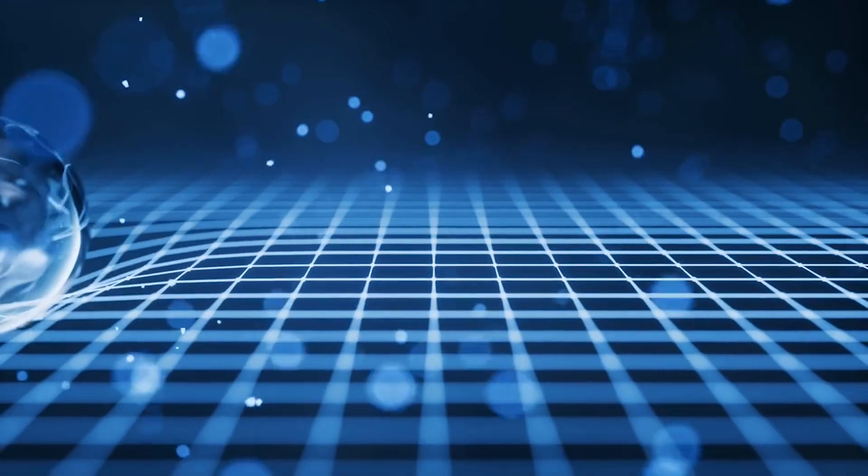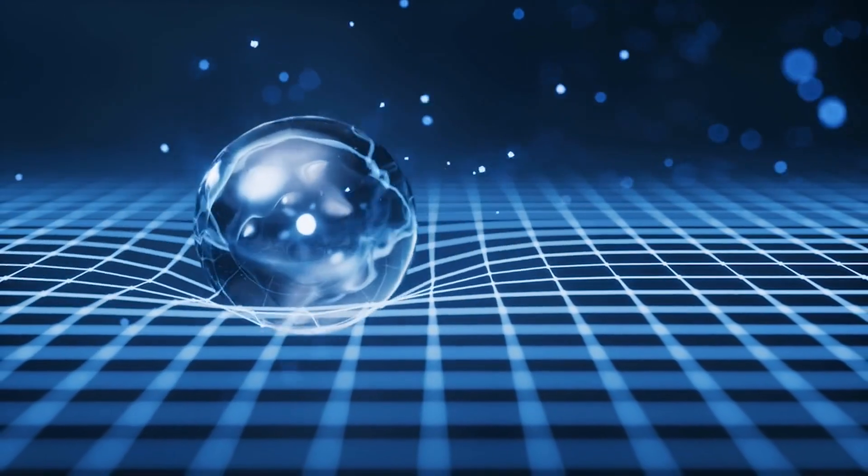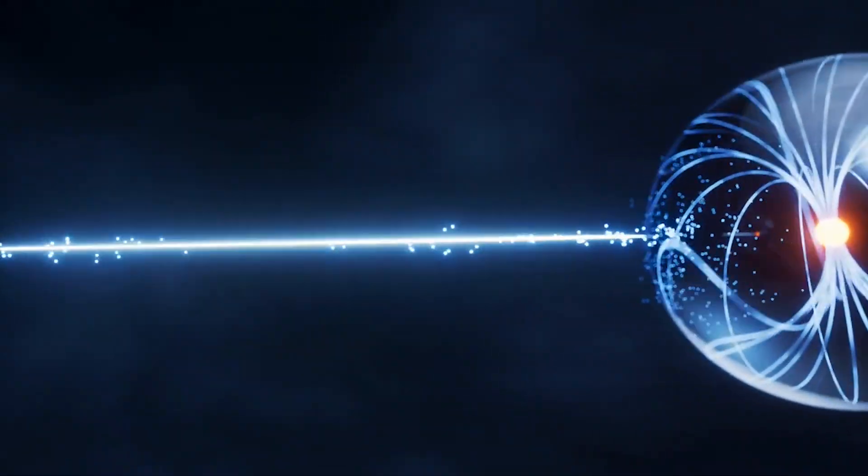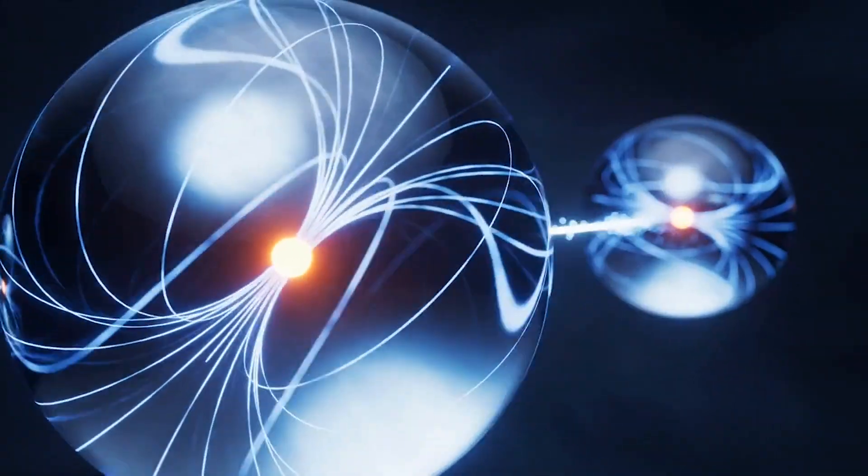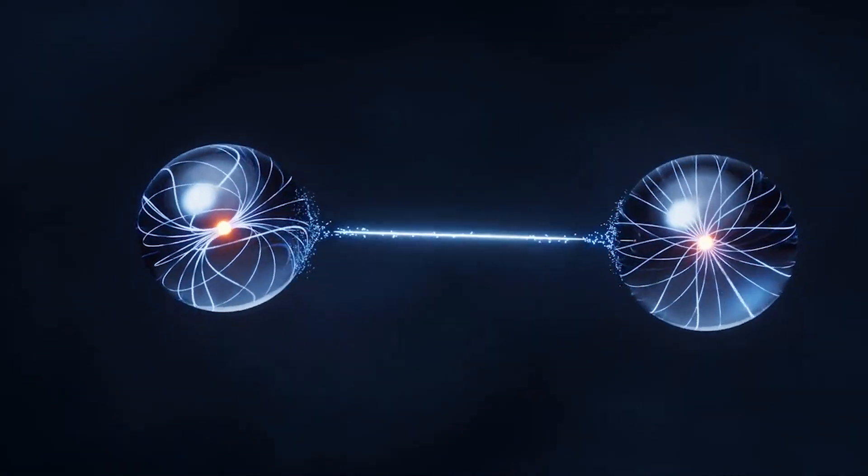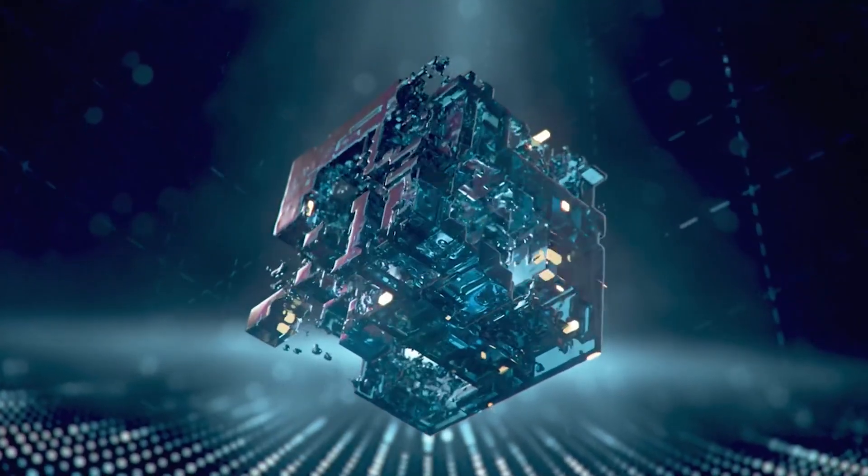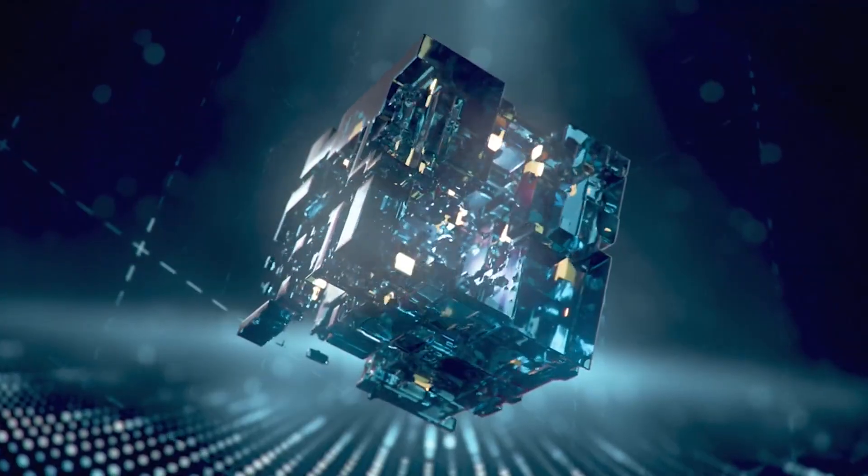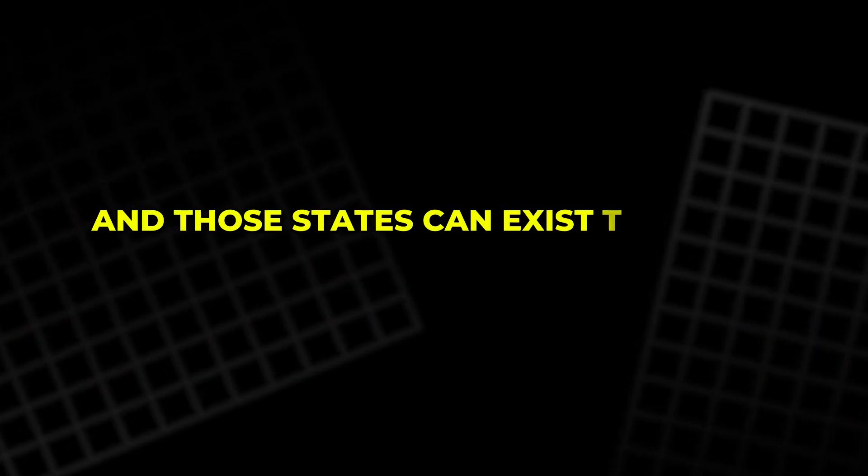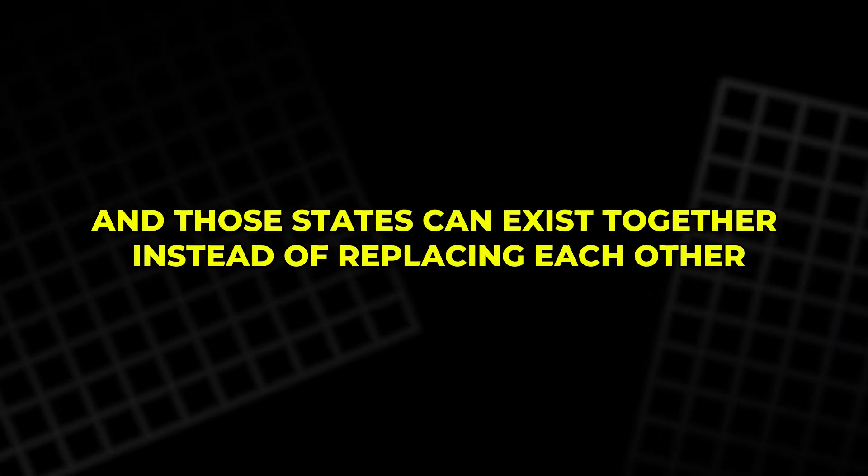The material behaved like a conductor and an insulator at the same time. It held two identities at once, expressing each depending on how it was examined. This duality changes how scientists think about matter. It suggests that materials can hold hidden states that activate only under the right conditions, and those states can exist together instead of replacing each other.